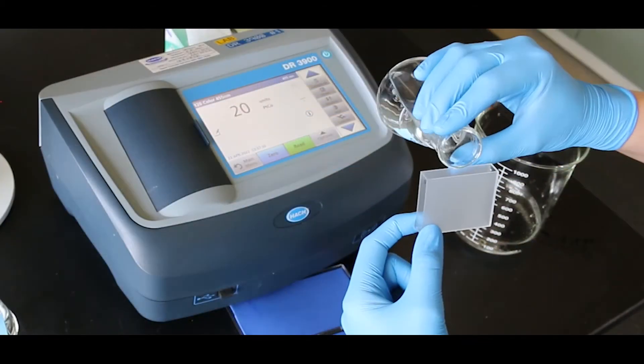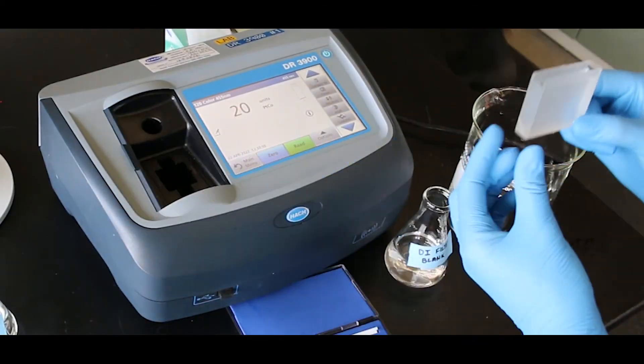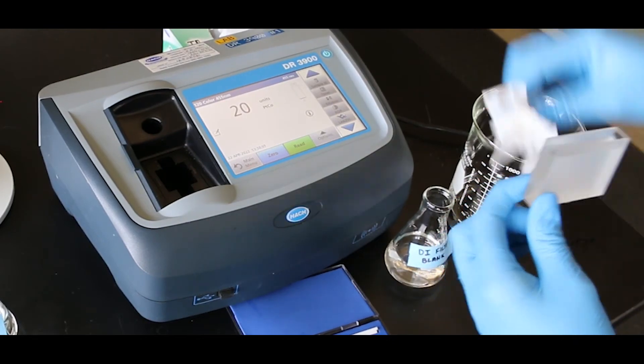For very low levels, a rectangular cell with a longer path length can also be used. See method for details.